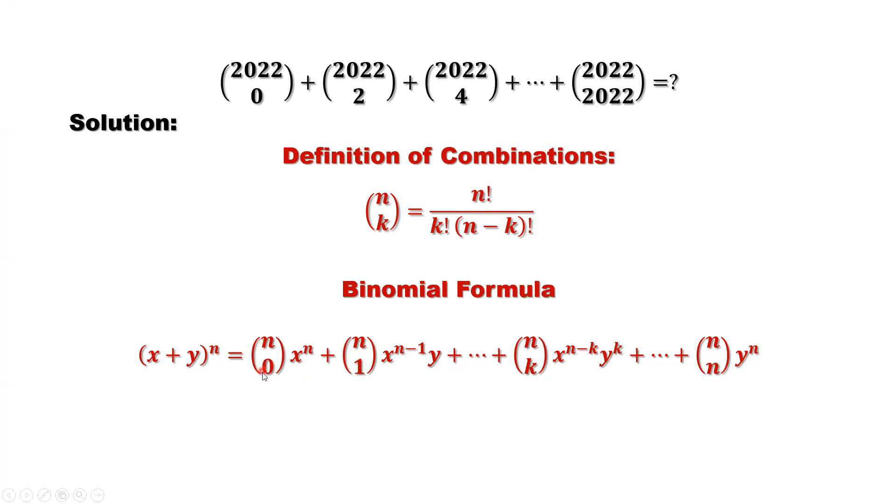n pick 0, n pick 1, n pick k in general, n pick n. The x term power is decreasing from n to 0. The y power is from 0 increasing to n.